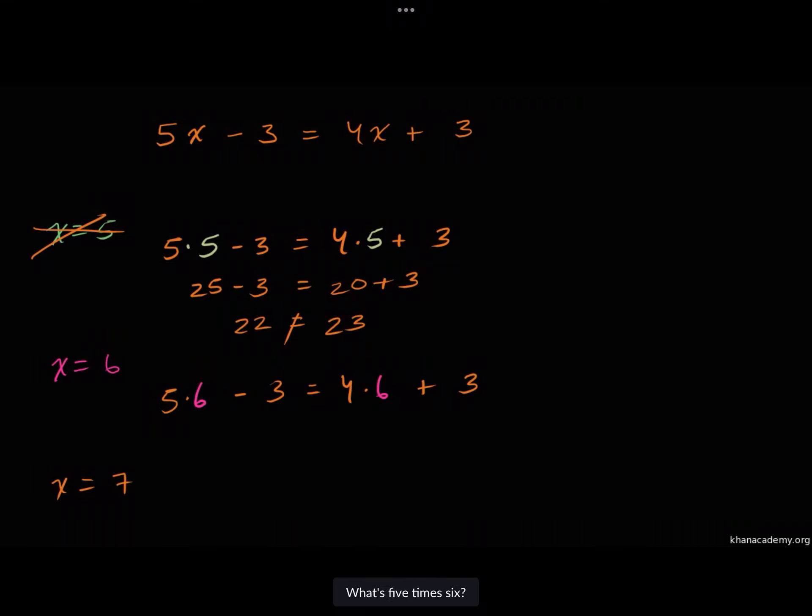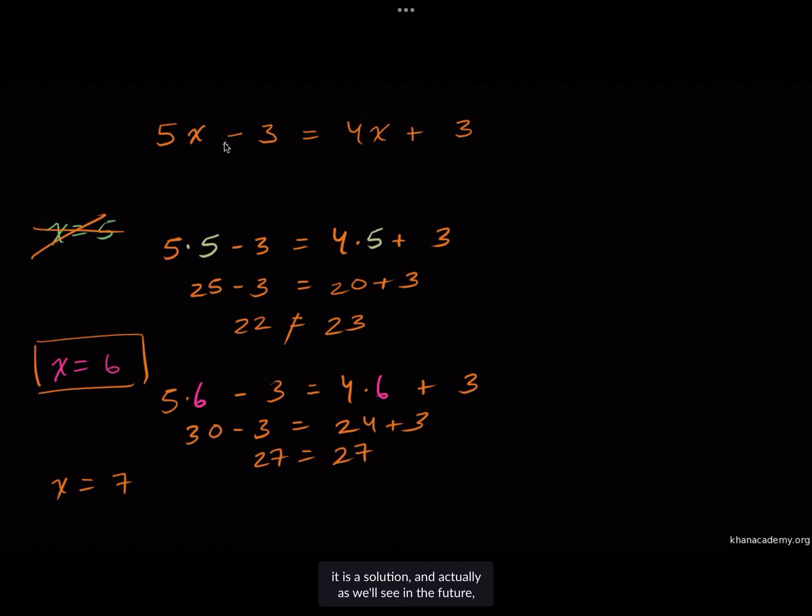Five times six is 30. So 30 minus three needs to be equal to four times six, which is 24, plus three. Well, this is true. 30 minus three is 27, which is indeed equal to 24 plus three. So x equals six does satisfy our equation. It is a solution, and actually, the solution to this equation.